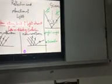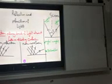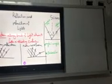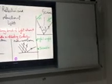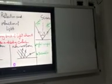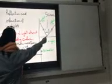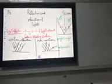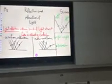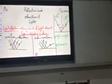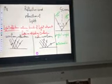The incident ray is the narrow light beam which strikes the reflecting surface at the point of incidence. This is the point of incidence — the point of entry. The reflected ray is the narrow light beam, represented by a line, that is reflected from the reflecting surface at the point of incidence.